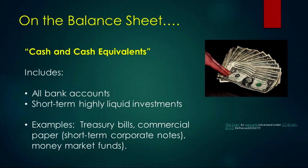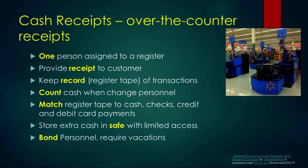Examples of cash equivalents include government treasury bills, commercial paper from companies — short-term notes where they've borrowed money — and money market funds. Commercial paper is when a company loans money to another company, so it's essentially an accounts receivable, but because it's so short-term it's converted to cash quite quickly.